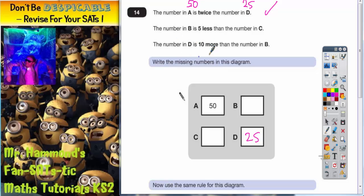But we might be able to do something with the third clue. The number in D is 10 more than the number in B. Well, D is 25. So what we've got to do is think, what number is 25, 10 more than? Well, 25 is 10 more than 15, isn't it? So 25 is 10 more than 15, so that makes sense. So B must be 15.